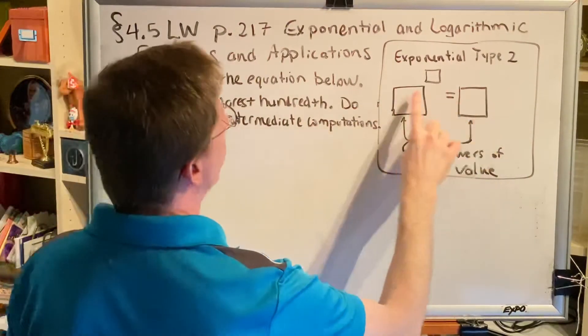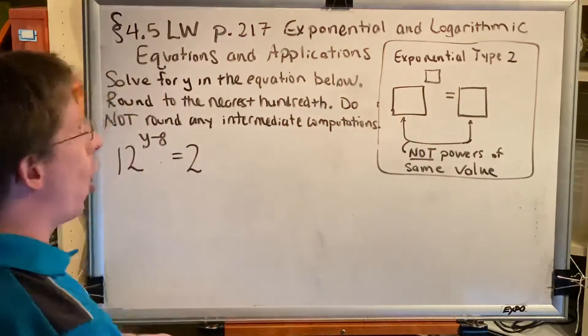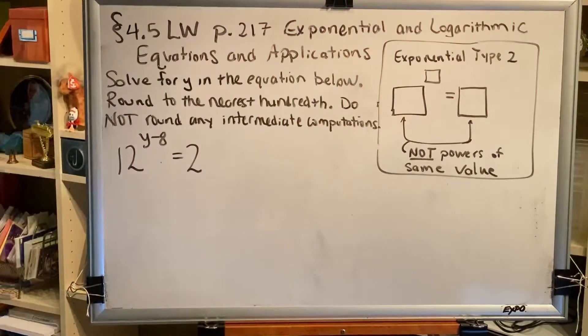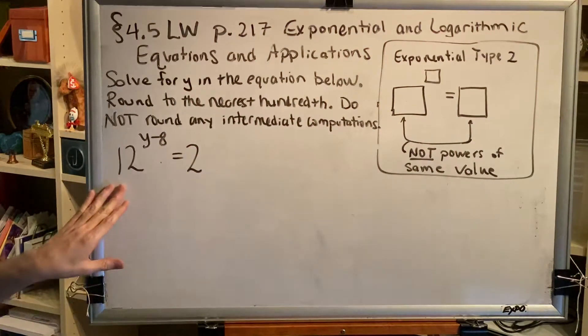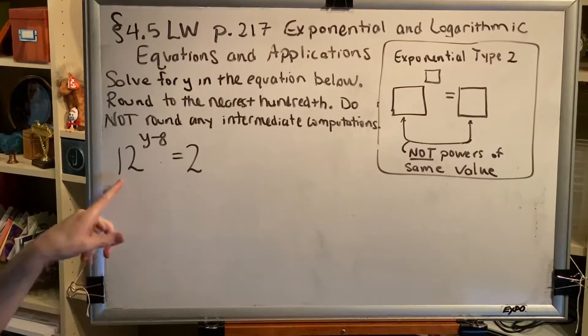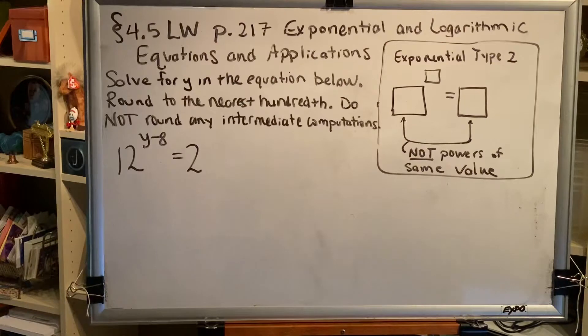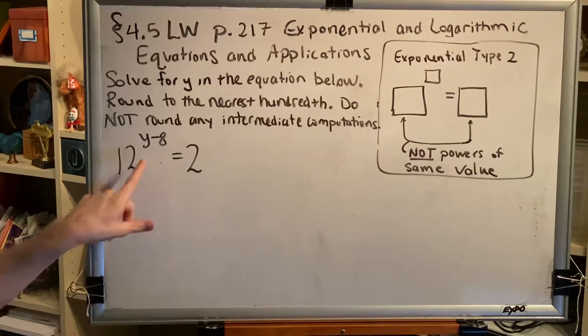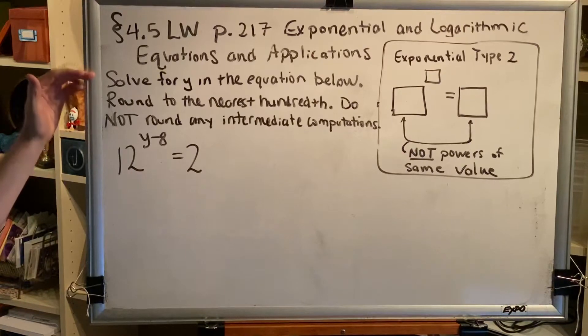What is required is that these two bases are not powers of the same variable. For example, this problem: 12 and 2 are not powers of the same value. You cannot write 12 as 2 to some number. So this is a type 2 problem and we're going to solve for y.